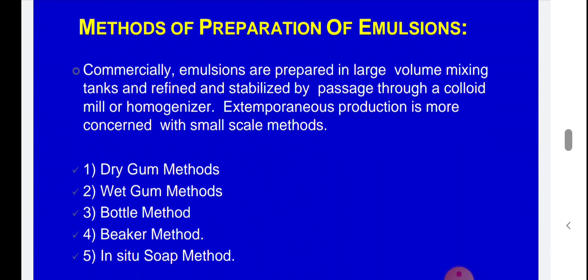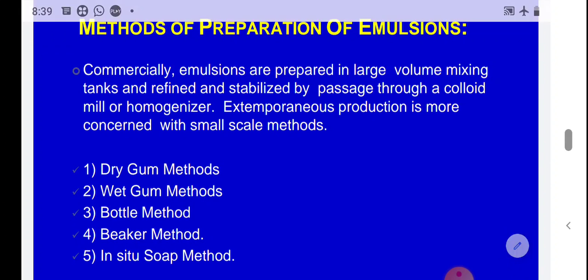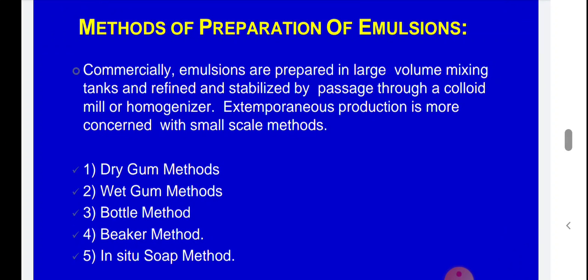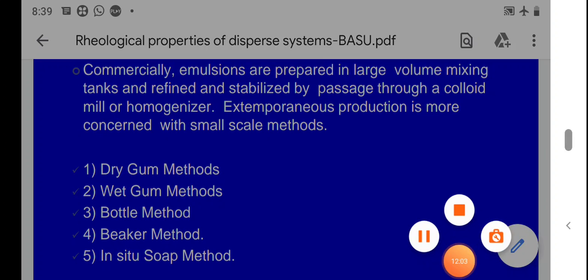Commercially, emulsions are prepared in large-volume mixing tanks and refined and stabilized by passage through a colloidal mill or homogenizer. Different types of methods exist for the preparation of emulsions, which have been covered in industrial pharmacy and first-semester pharmaceutical subjects. The details of these different preparation methods will be discussed in the next class.